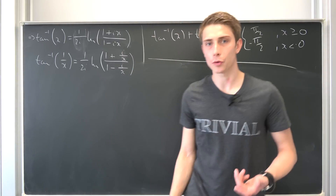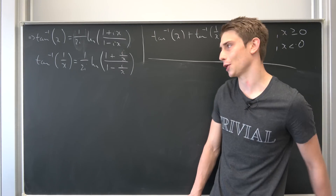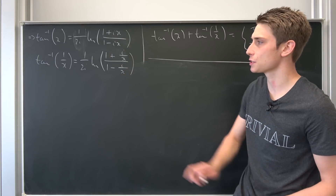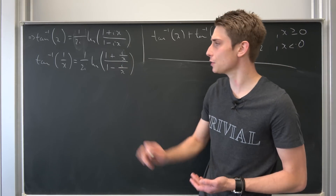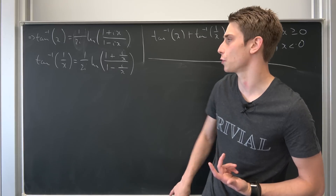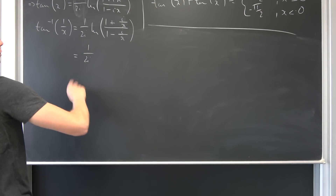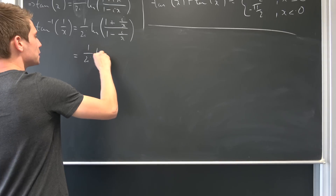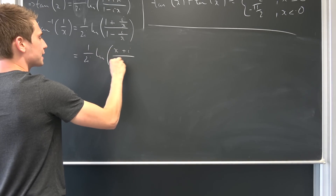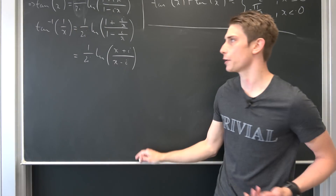We've come pretty far and the rest is straight calculation. If we advance this fraction by multiplying by x/x, we end up with something nicer: arctan(x) = 1/(2i) · ln((x + i) / (x − i)). That looks way friendlier.